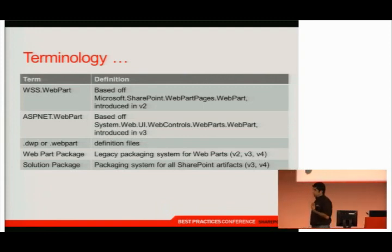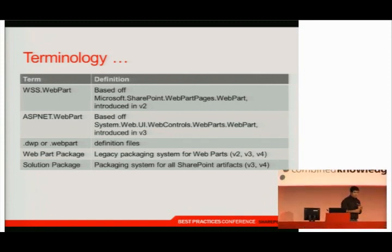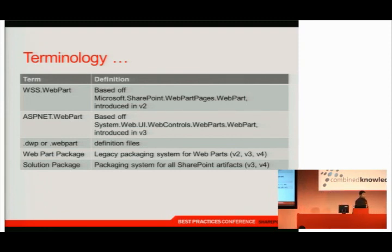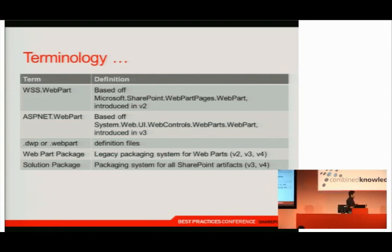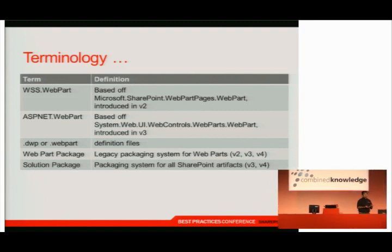Before we dive in, let's get our terminology on the table. First, a WSS web part is based off the microsoft.sharepoint.webpartpages.webpart class, introduced in version two, also known as SharePoint 2003. We have ASP.NET web parts, based off system.web.ui.webcontrols.webparts.webpart, introduced in SharePoint 2003. We have definition files — the serialized form of web part instances.